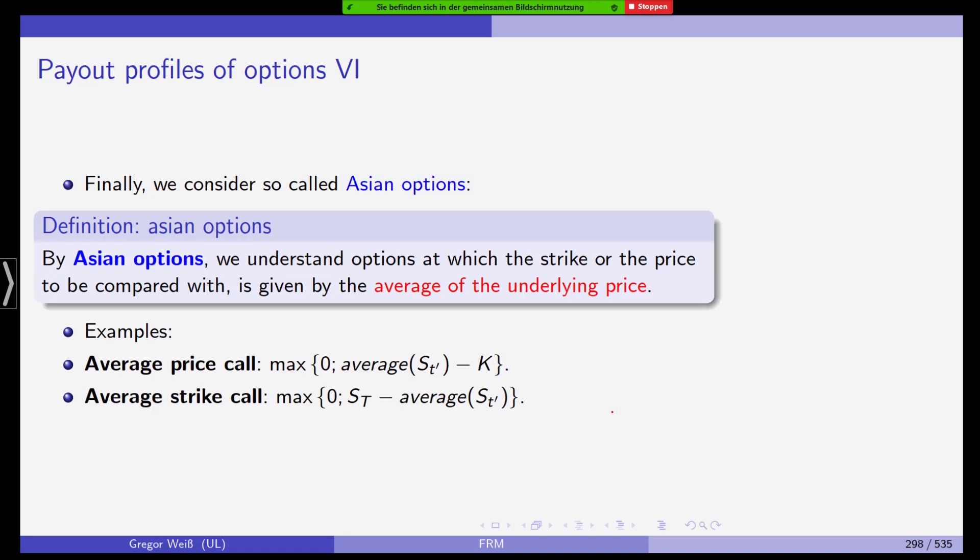And finally, we have so-called Asian options. An Asian option is an option in which the strike or the price to be compared with is given by the average of the underlying price. For example, an average price call is the maximum of zero and then the average stock price over the lifetime of the option minus the strike. And the average strike call is just the corresponding call version of the average price call.